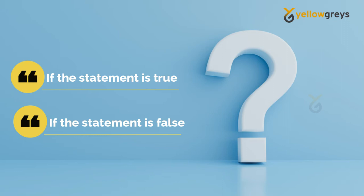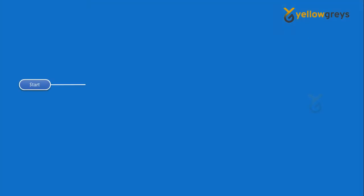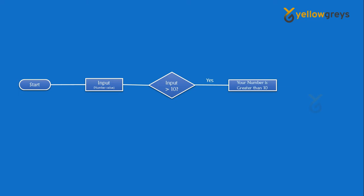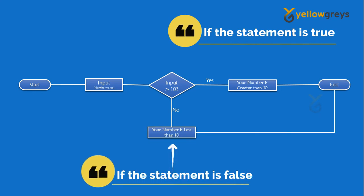This is a very simple example to understand the concept of the IF condition. Here is my logical workflow: I have input a number and take it to validation to see if it is greater than 10 or less than 10. If it is greater than 10, I want to write the result as 'Your number is greater than 10.' If it is less than 10, I want to write the result as 'Your number is less than 10.'